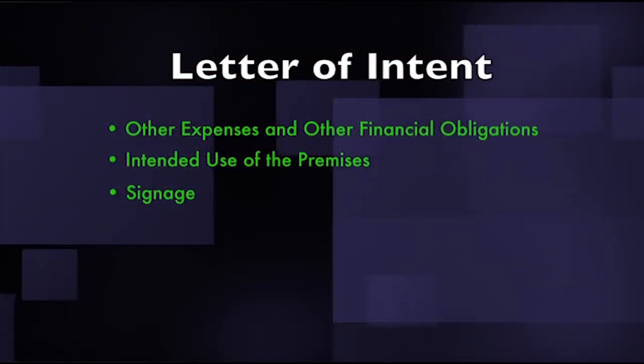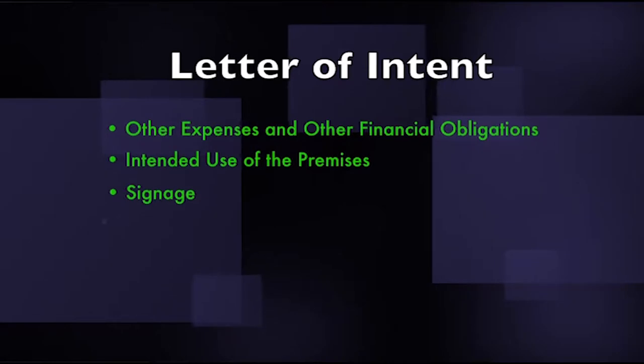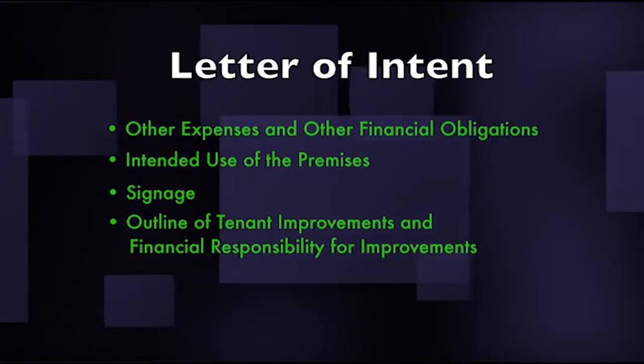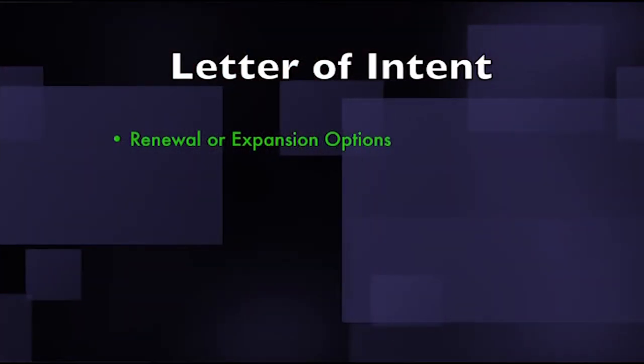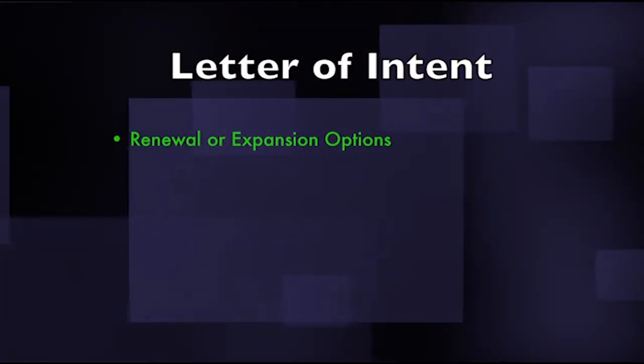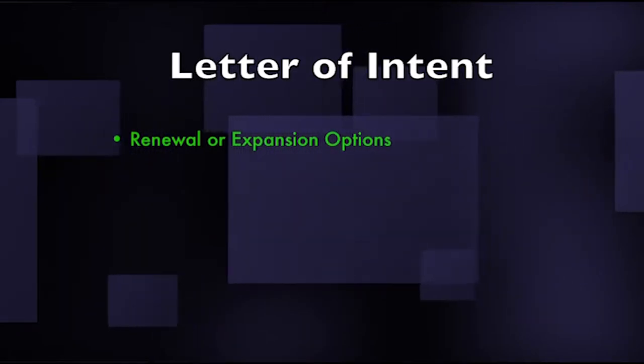Additional LOI sections include: signage — an outline of anticipated signage required by the tenant; tenant improvement details — what renovations and repairs the tenant is requesting and who is financially responsible (in retail the tenant is often responsible; in office space, the landlord often does renovations and amortizes the cost into the lease); and renewal or expansion options — if the tenant is planning possible expansion or renewal, this should be discussed in the initial LOI rather than later during final lease negotiation.